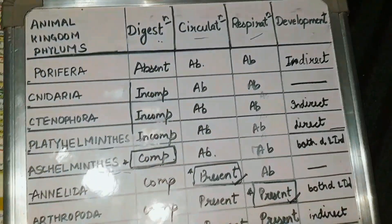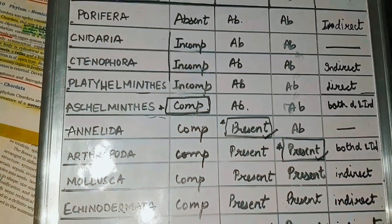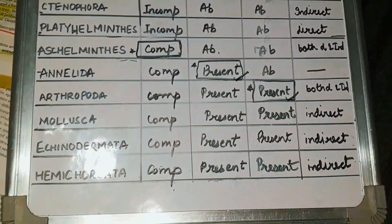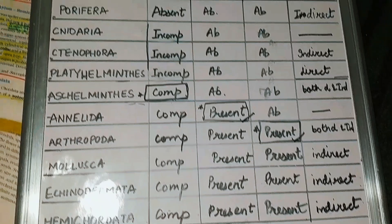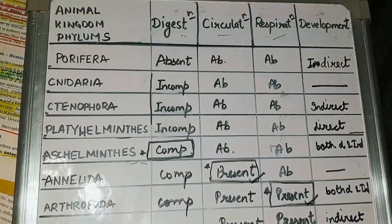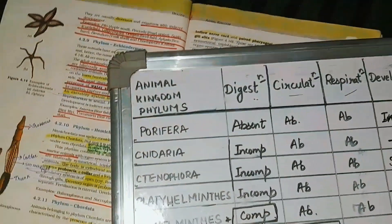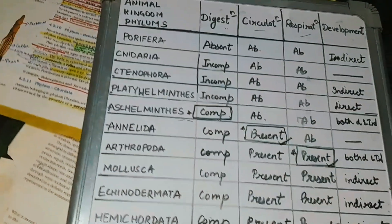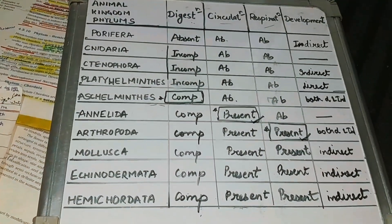All the main topics of the Animal Kingdom phylums have been covered in these two videos. Make sure that you watch the first part also. Please go through your NCRT also. And in the same way, make a tabular form for a quick revision of this chapter.